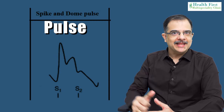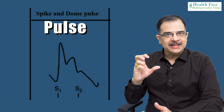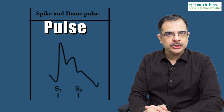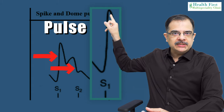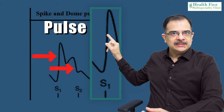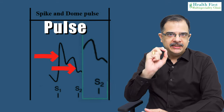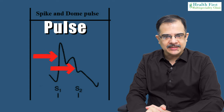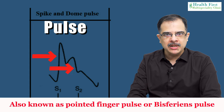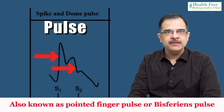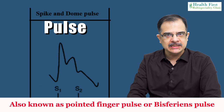Looking at the pulse, you can see in this figure that there is an increased force of cardiac contraction because of the obstruction, so the first peak is high. Subsequently, when there is blood flow obstruction, the second peak remains low. This is classically known as the spike and dome pulse, also known as the pointed finger pulse or bisferiens pulse.